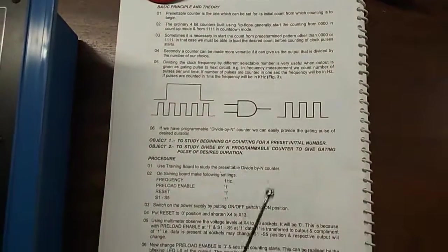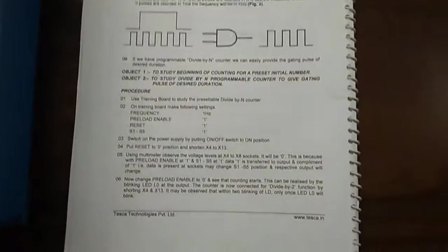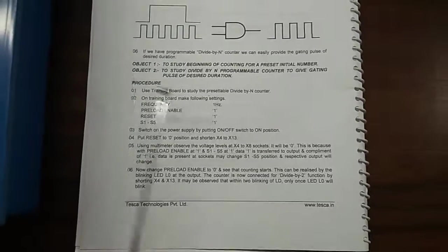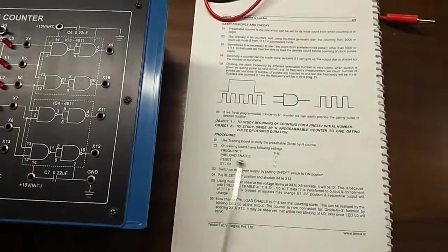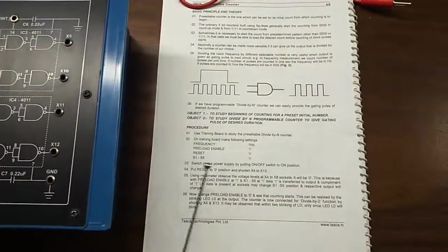First, our objective is to study beginning of counting for a preset initial number. For this we will follow this procedure. First we will make the following settings on the training board.